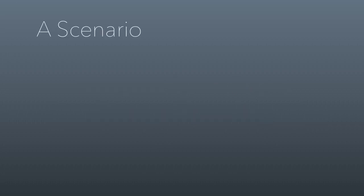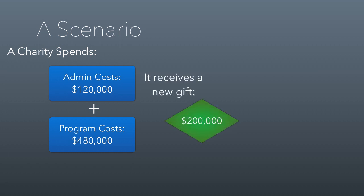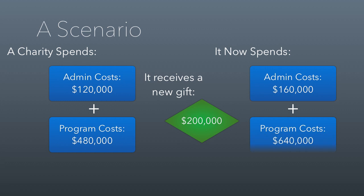Let's talk about the difference between the two and to illustrate, I'm going to give you a scenario. Let's pretend that we have a charity spending $120,000 a year on admin costs and $480,000 on program costs, and then that organization gets a new gift of $200,000. With that money, they decide to divvy it up equally, or sort of pro-rata between the two activities. So now their admin costs are $160,000 and their program costs are $640,000.